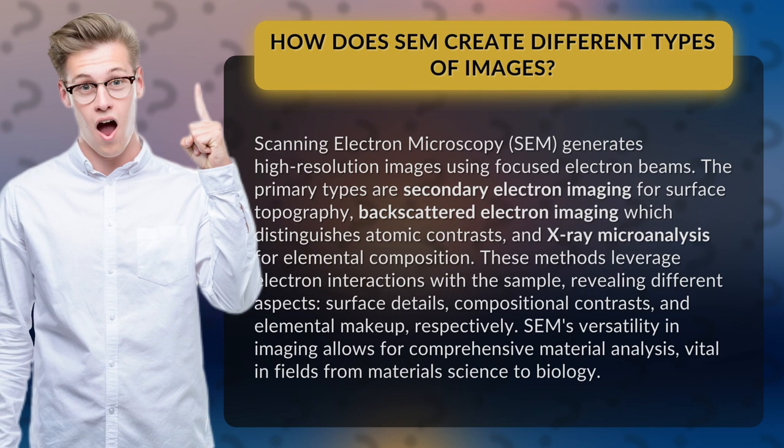The primary types are secondary electron imaging for surface topography, backscattered electron imaging which distinguishes atomic contrasts, and X-ray microanalysis for elemental composition.